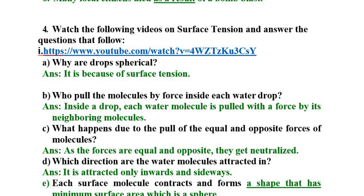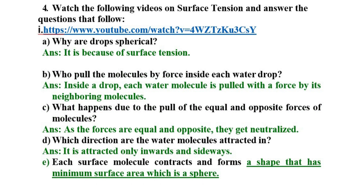Third question: What happens due to the pull of equal and opposite forces of molecules? Each surface molecule contracts and forms a shape that has minimum surface area, which is a sphere.